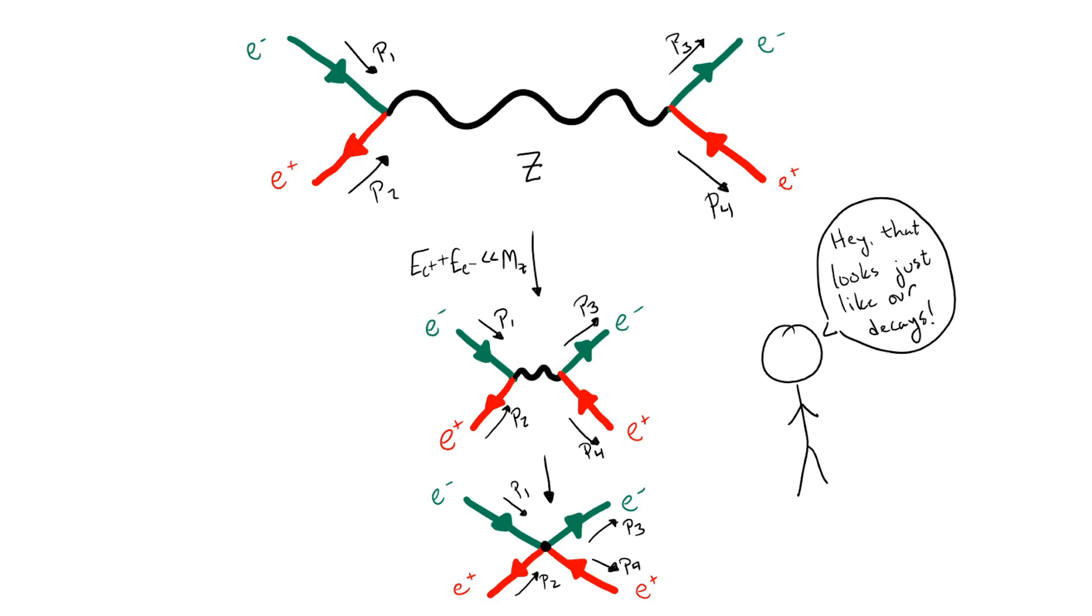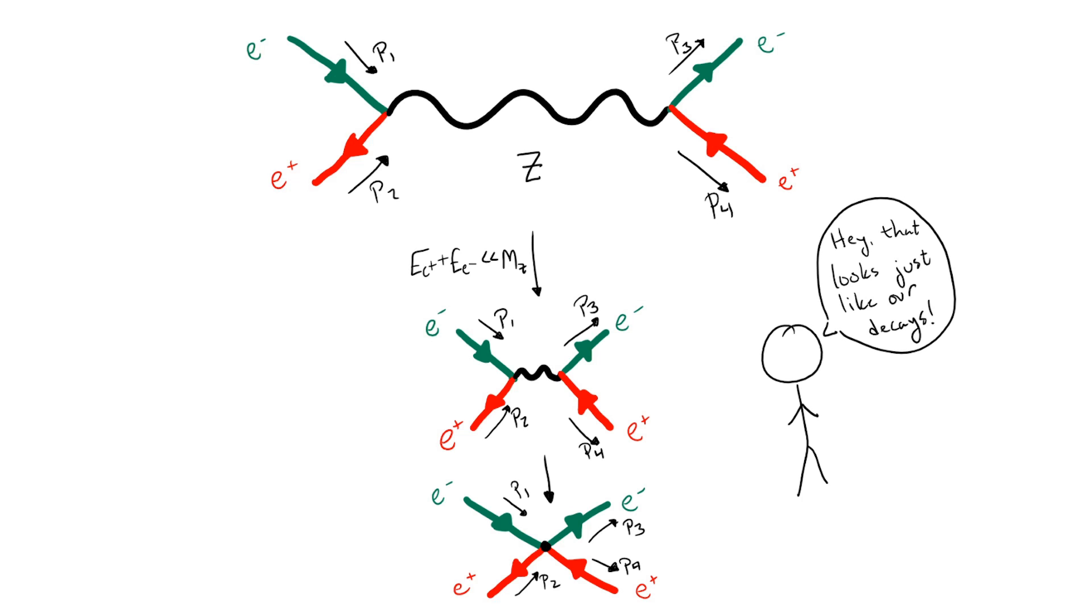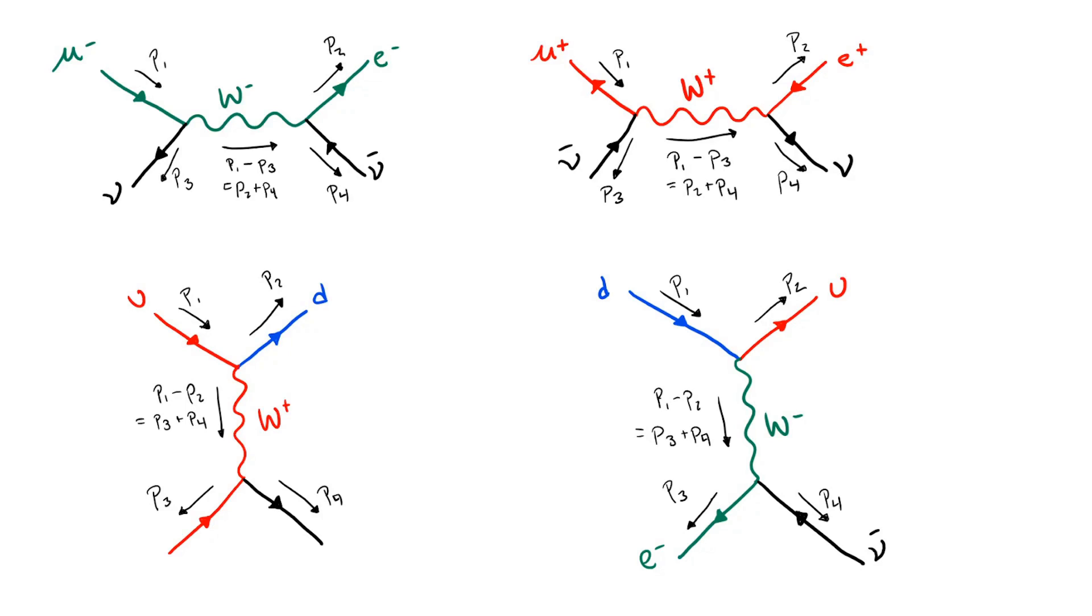Of course, we can go the other way and replace the four fermion interactions with processes involving a heavy intermediate particle. So let's go ahead and implement this in the scenario of Fermi interactions. We have to be a bit careful to still conserve the charges of QED and QCD. If we stare at these interactions long enough, we find that all of them can be explained by fermions coupling to a new, massive particle.